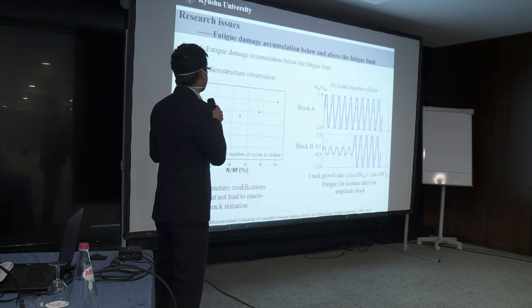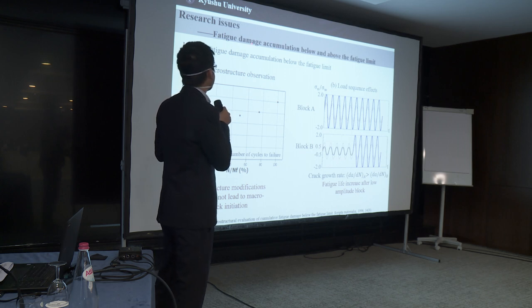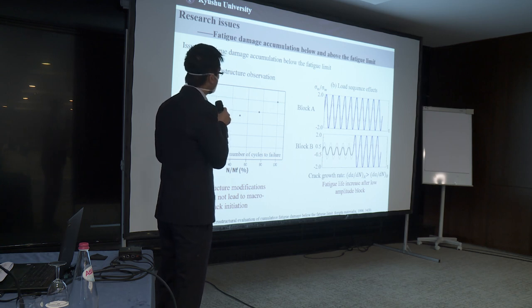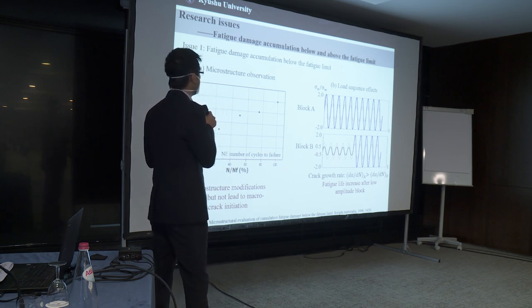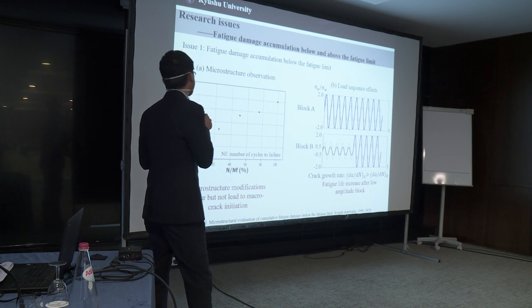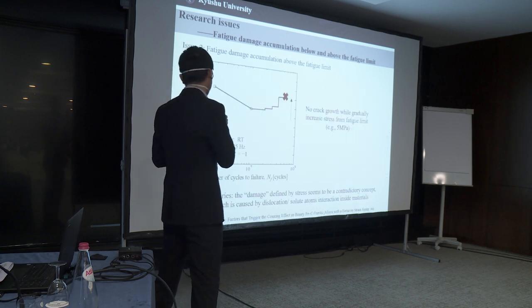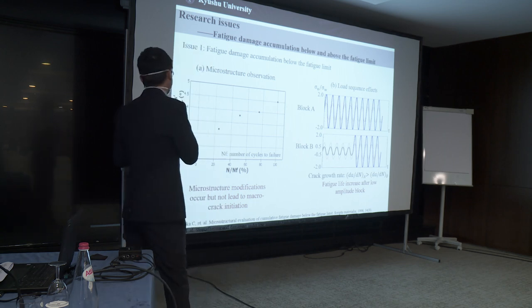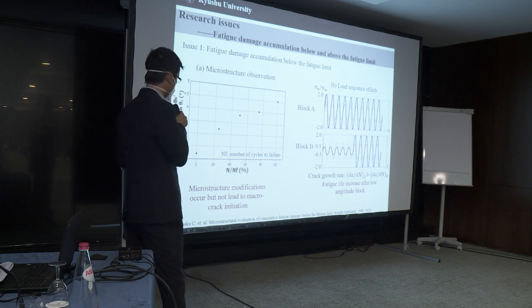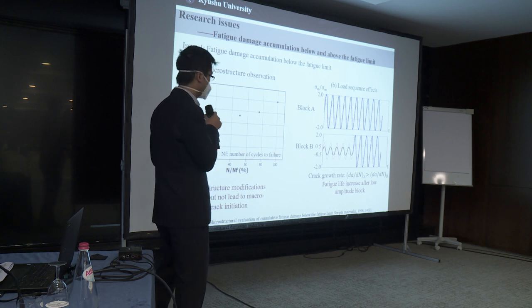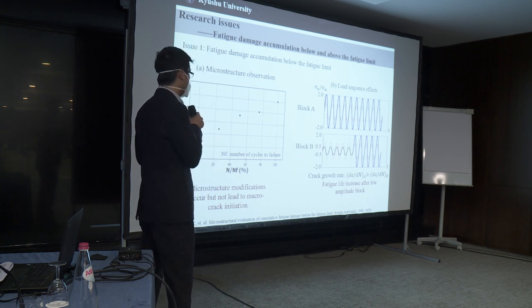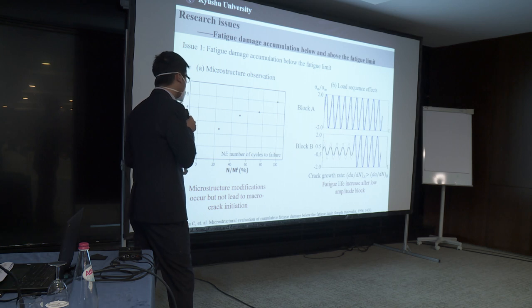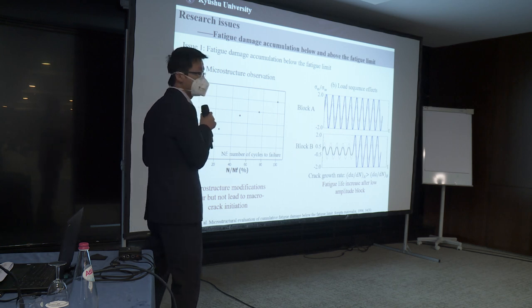Actually, previous people have done a lot of work on fatigue damage accumulation. An interesting issue is about the fatigue damage accumulation below and above the fatigue limit. Right below the fatigue limit, from the material side it turned out that dislocation cells and misorientation increase with the number of cycles increase. So in other words, even though no micro crack initiation, damage still occurs.